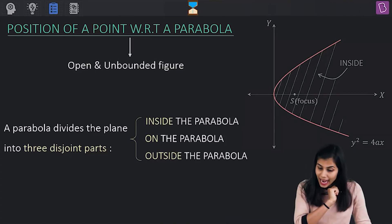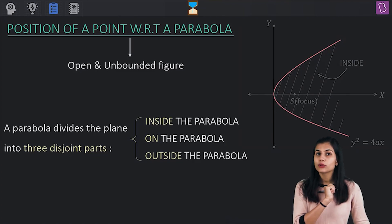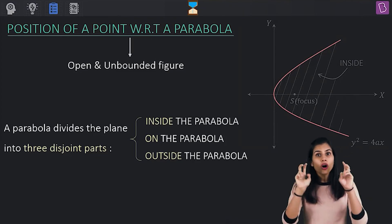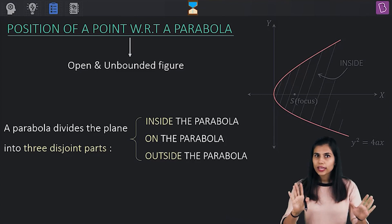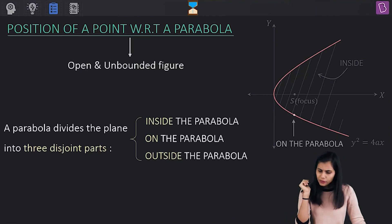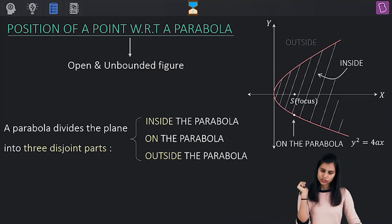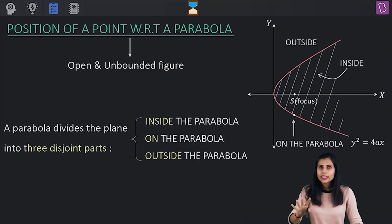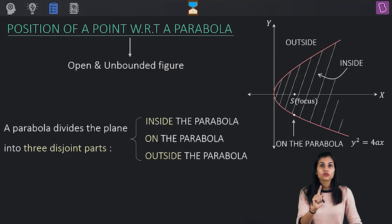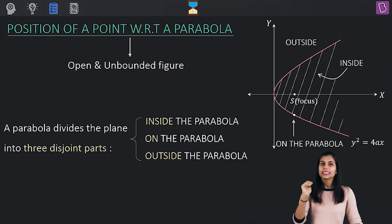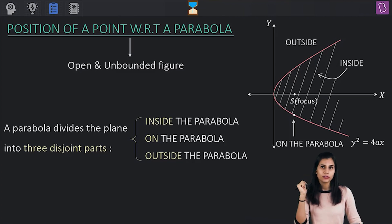The boundary of the parabola constitutes the region on the parabola. The remaining region, which is devoid of the focus, constitutes being outside the parabola. Any point sitting in this region is called an exterior point of the parabola.